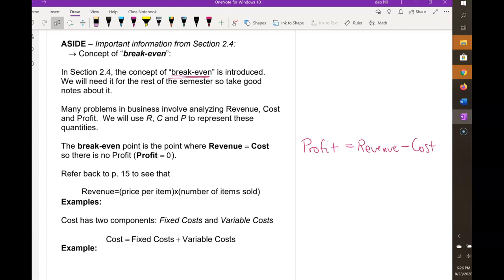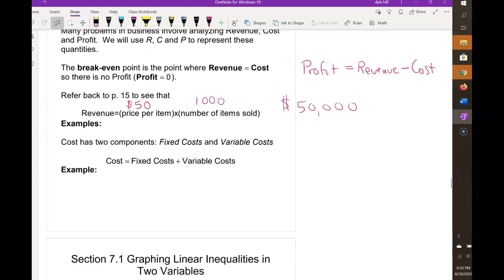Refer back to page 15 where it talks about the revenue equation. It says revenue, the money you bring in, is going to be the price per item times the number of items you sell. So suppose you sell tennis shoes that are $50 and you sell 1,000 pairs. Then you multiply those together to get $50,000 of revenue. This idea comes up a lot in this class where if you want to know the total, you take the per each and multiply by how many.